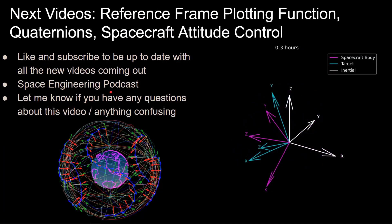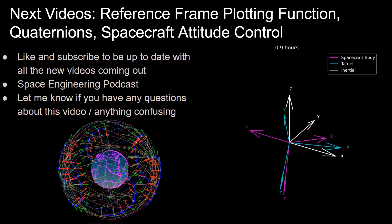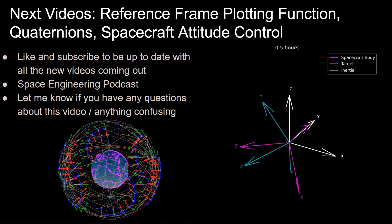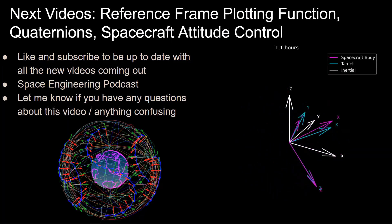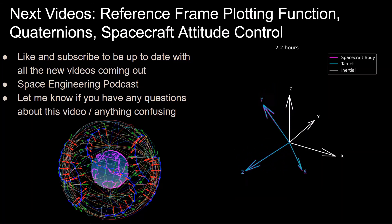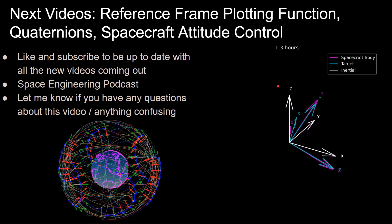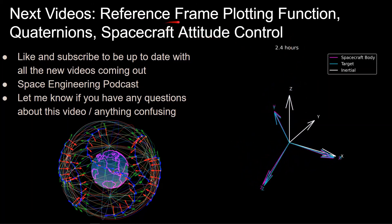That's pretty much it for this video. Be sure to like, subscribe, and share with anyone who might find this useful. Let me know any questions about rotations, active and passive, in the comments — these are very confusing and I still have to play around with 3D plots to wrap my head around them. All of this is leading up to spacecraft attitude control: simulating detumbling a spacecraft from random rotation and lining it up with the LVLH frame. Next video will cover the reference frame plotting function, quaternions, and spacecraft attitude control.